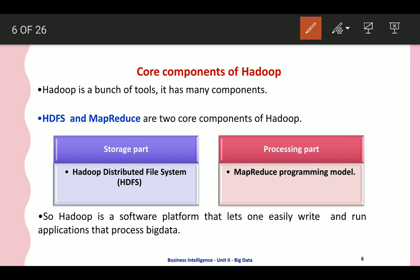Hadoop is a bunch of tools — a toolset that deals with big data. Under Hadoop there are many components, and the two main core components are HDFS and MapReduce. HDFS is the storage part, abbreviated as Hadoop Distributed File System, and MapReduce is the processing part — a programming model that processes data through program code.